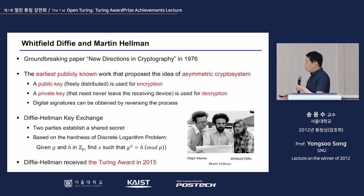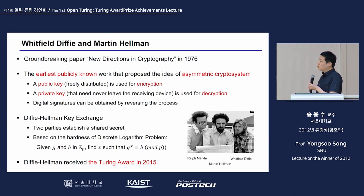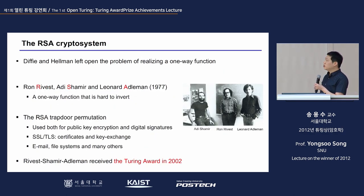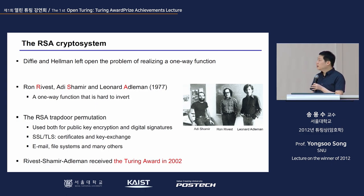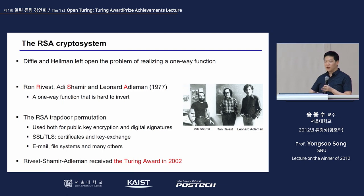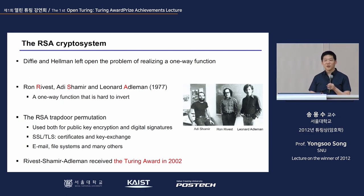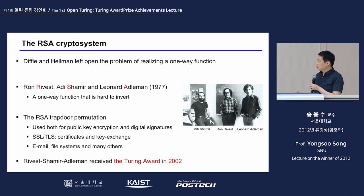Before 'New Directions in Cryptography,' Diffie and Hellman made a concrete algorithm for key exchange and the concept of public key, but they did not provide a complete scheme for public key encryption because they needed to realize a one-way function and couldn't solve it. The three people — Rivest, Shamir, and Adleman — very quickly found a way to solve the one-way function problem, and this is called RSA from their last names.